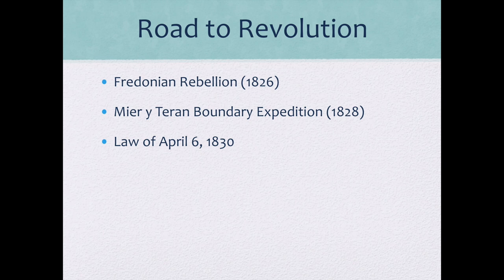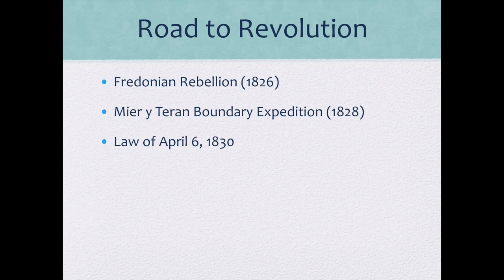We have to go back further to look at the roots of the Texas Revolution. There were freebooters and filibusters coming in to try to take Texas away from Spain and later Mexico. One of those events was the Fredonian Rebellion, which happened around Nacogdoches in 1826, where Hayden Edwards and his brothers led a rebellion against Spanish rule. Stephen F. Austin actually came in and led the military force that helped put that rebellion down.